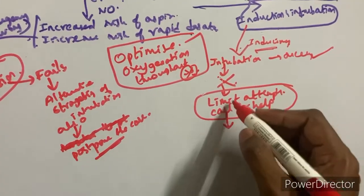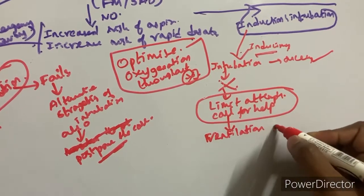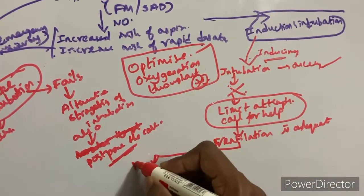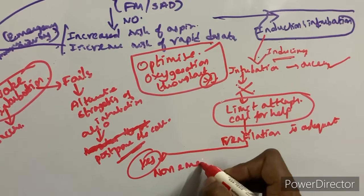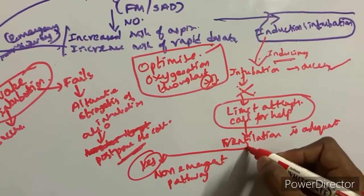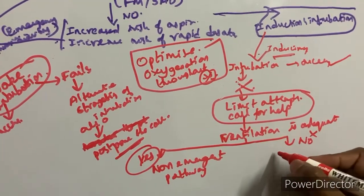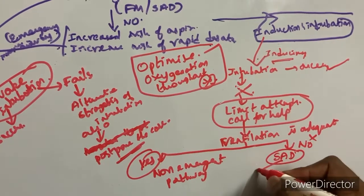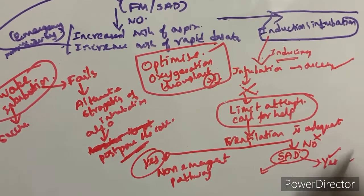After calling for help, assess whether face mask ventilation is adequate. If ventilation is adequate, proceed to the non-emergent pathway. If ventilation is inadequate, use supraglottic airway devices (SAD) to ventilate the patient. If ventilation is then adequate with the SAD, maintain ventilation until help arrives.